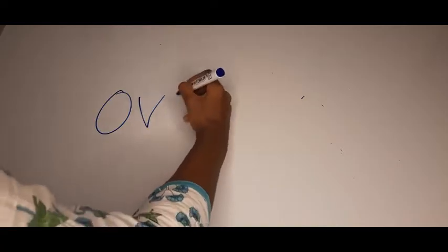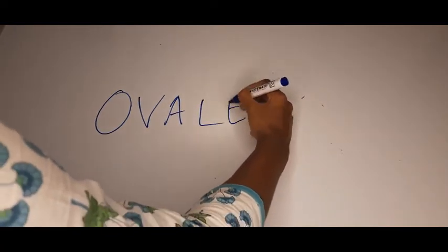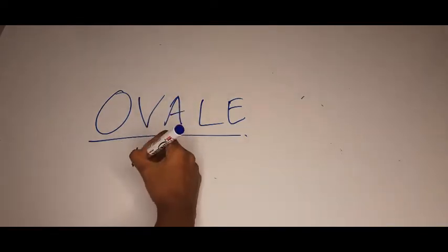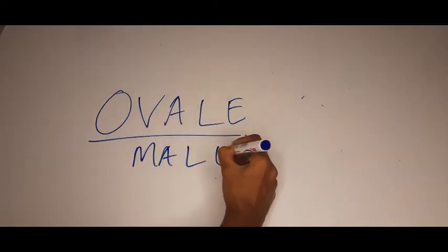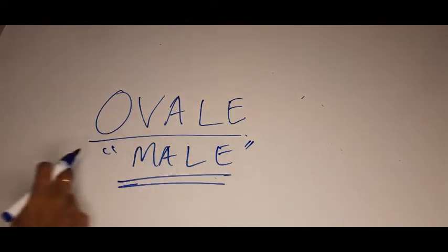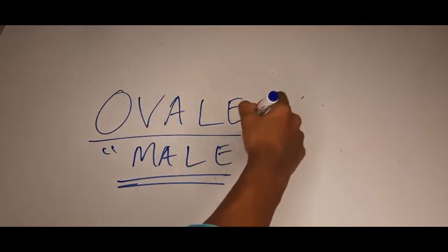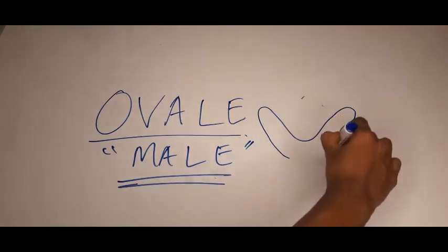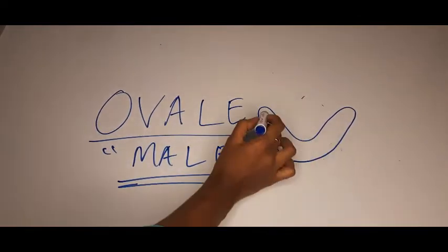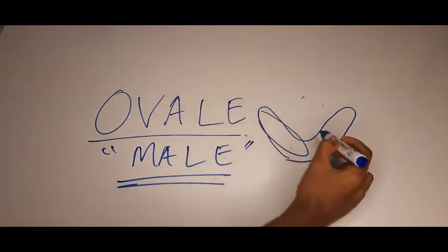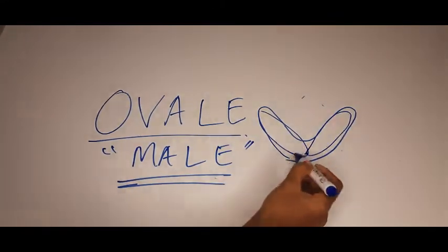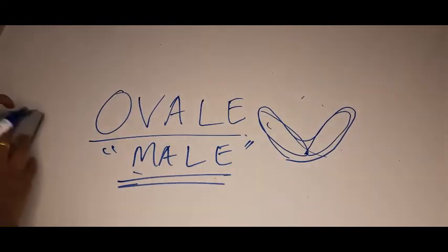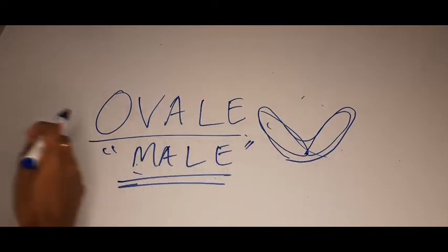The next foramen is the foramen ovale. Ovale. Oval shaped. It rhymes with the word male. And male is a mnemonic to remember the contents that passes through ovale. Now, how do you draw a mandible? Usually you draw a mandible like this. And if you look closely, it looks like two ovals placed next to each other.